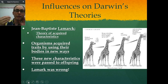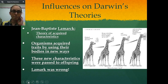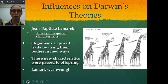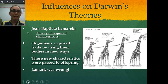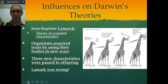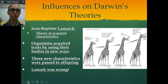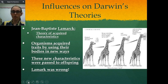But if you acquire a characteristic throughout your life — say you get a tattoo, or you lose a limb, or you have some sort of scar — that is something you acquired during your life. That's not genetic; it's not written in your DNA. Your children won't be born inheriting those traits. Those traits are not heritable. So the theory of acquired characteristics by Lamarck was wrong.